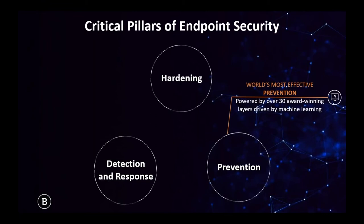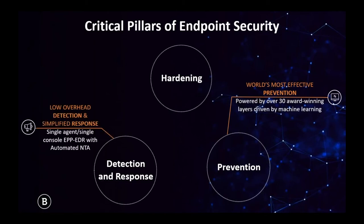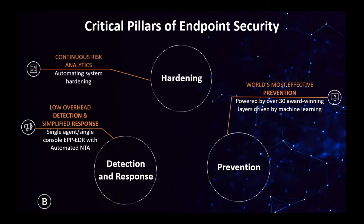We have the best and most effective prevention in the marketplace. We do this because we have 500 million sensors around the world collecting threat intelligence, creating very strong machine learning and sophisticated artificial intelligence. We also have a single agent, single console detection and response platform where security analysts can figure out easily the root cause of a breach, see the harm done on a machine or within an environment, and remediate the situation. We have a very effective hardening layer, and we've recently added risk analytics to continuously search for system-level misconfigurations.